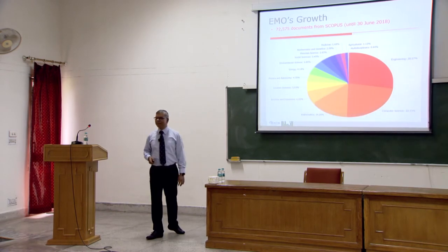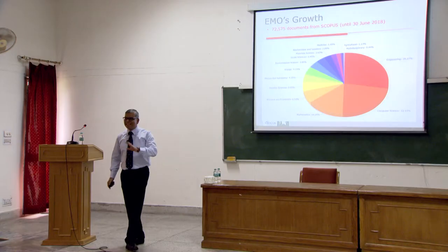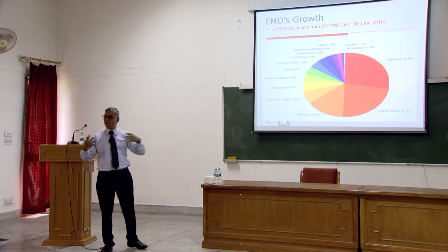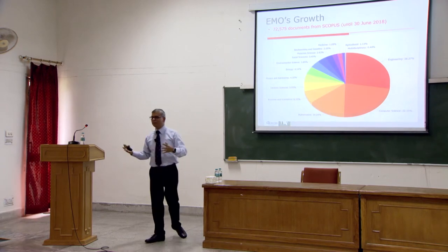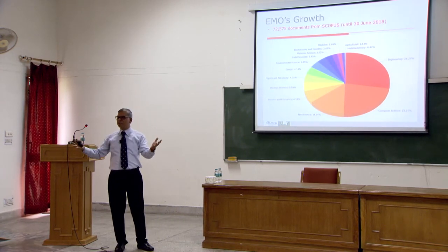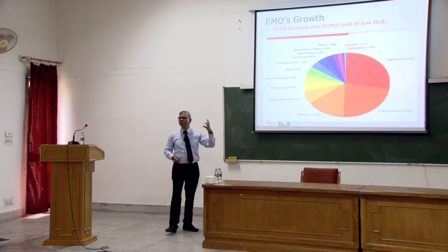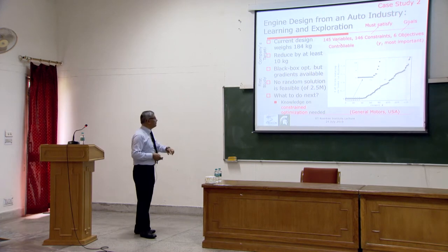Where are these methods being applied? Mostly engineering and computer science — about 50% of the literature. But also mathematics, business, decision sciences, physics and astronomy, medicine, material science, and biochemistry. Multi-criteria optimization has gone well beyond computer science and engineering into all these fields, because everyone needs to consider multiple criteria when designing experiments or products. There are codes and softwares available, so I think we have contributed in some sense to the entire science and technology area.